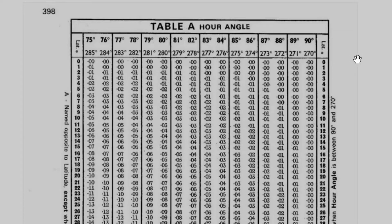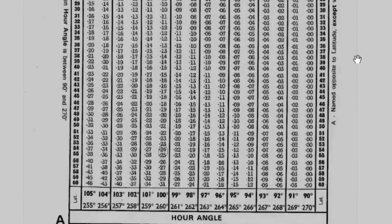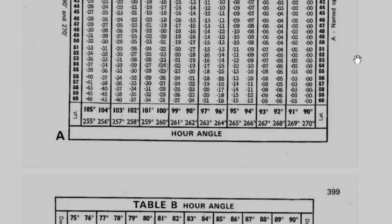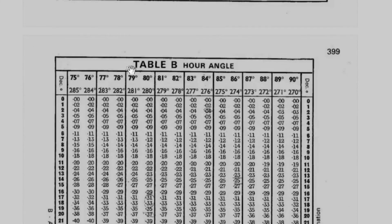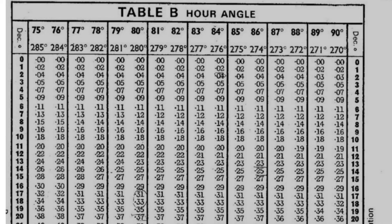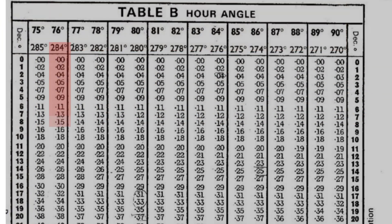The upper and bottom part will still be LHA, and the left or right part is now our declination. It's the same interpolation process as A. Just look at how much change the values make from one declination to another.